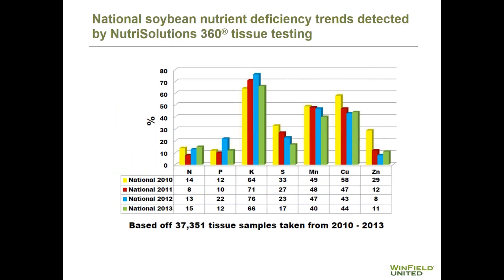Now we'll look at soybeans — first a national look at soybean nutrient deficiency trends in the NutriSolutions 360 program across four different years: 2010, 2011, 2012, and 2013, specifically looking at nitrogen, phosphorus, potassium, sulfur, manganese, copper, and zinc. Across these four different growing seasons nationally, looking at a database of over 37,000 tissue samples, it's actually potassium that was the number one nutrient deficient in soybean across the United States in each of these four years. Manganese and copper were the two micronutrients most commonly deficient or limiting in soybean in the United States.